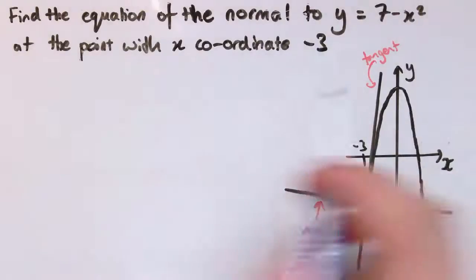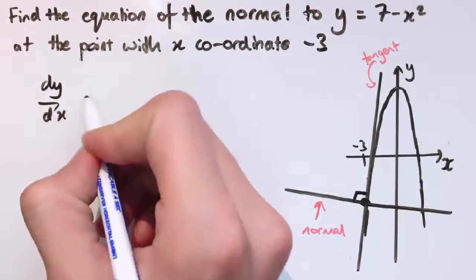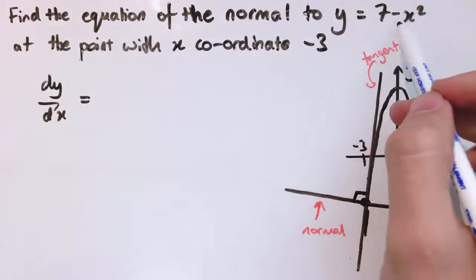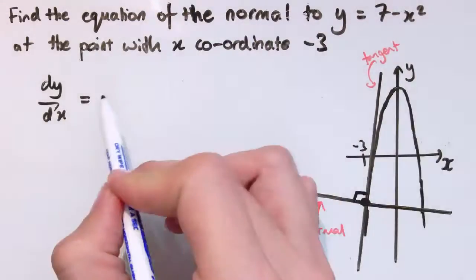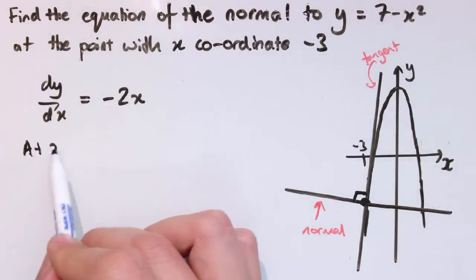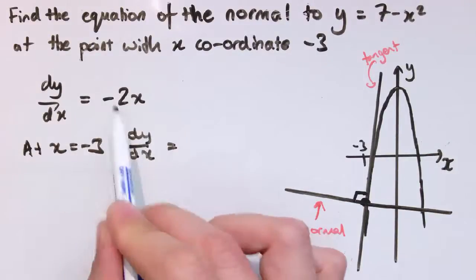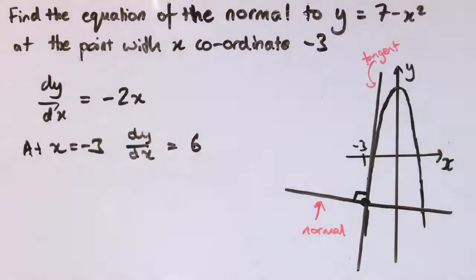So let's go and work out its equation then. So firstly, if we differentiate the function, we get dy by dx, and here the 7 differentiates to 0, and minus x squared just becomes minus 2x when we differentiate it, and at x equals minus 3, dy by dx is minus 2 times minus 3, that's plus 6.